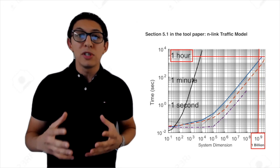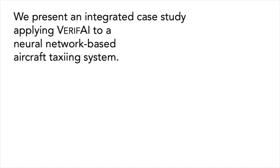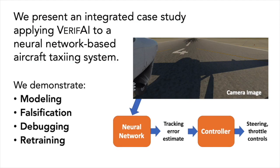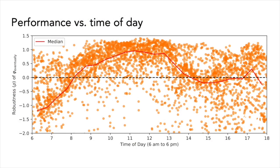VERIFY is a toolkit for formal analysis and design of AI-based systems, which we've applied in a broad range of domains. We present an integrated case study on an experimental neural network-based taxiing system developed at Boeing, demonstrating a complete design iteration for the system. We formally model the system and its environment, using the model to generate test scenarios and perform falsification, finding many cases of undesirable behaviors such as the neural network being confused by shadows under certain time and weather conditions.